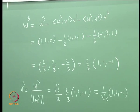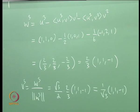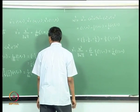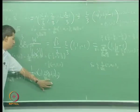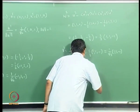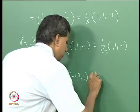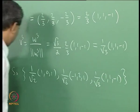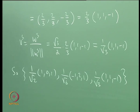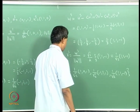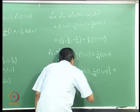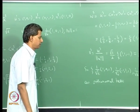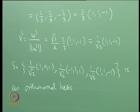We verify ‖v_3‖ = 1 and that v_3 is orthogonal to v_1 and v_2. So this gives an orthonormal basis. To summarize: v_1 = (1/√2)(1, 0, 1), v_2 = (1/√6)(-1, 2, 1), and v_3 = (1/√3)(1, 1, -1). These satisfy the required span properties: span{v_1} = span{u_1}, span{v_1, v_2} = span{u_1, u_2}, and span{v_1, v_2, v_3} = span{u_1, u_2, u_3}.